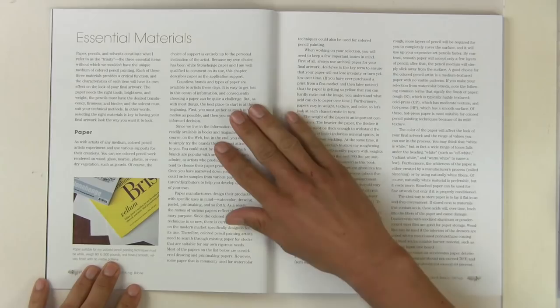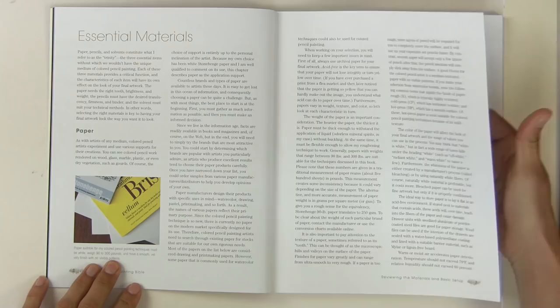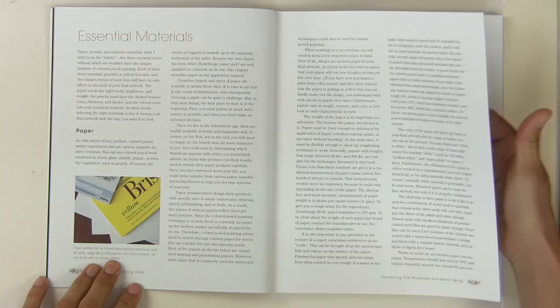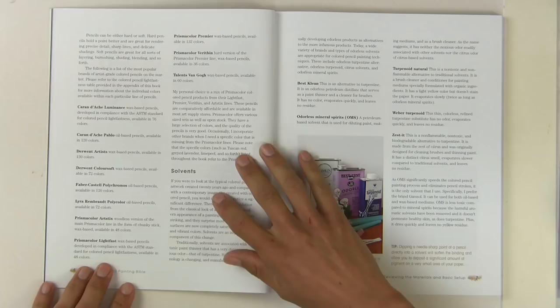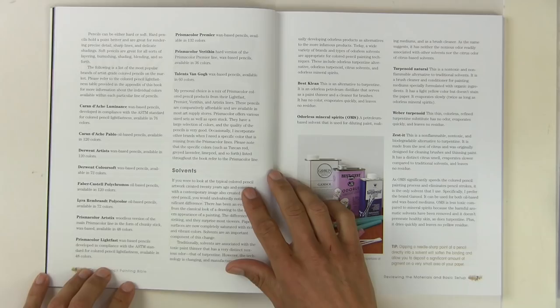So reviewing the materials basic setup as well. Now she goes through the paper types, which is really useful, something I've already found out with colored pencil. The types of paper that you use is critical. Then she goes on to the pencils, which are equally as important, and really goes through lots of different makes.